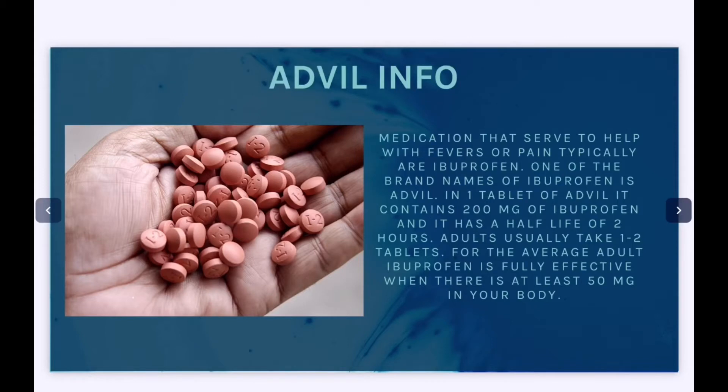Adults usually take two different doses — one tablet or two tablets — and for the average adult, ibuprofen is fully effective when there is at least 50 milligrams in your body.